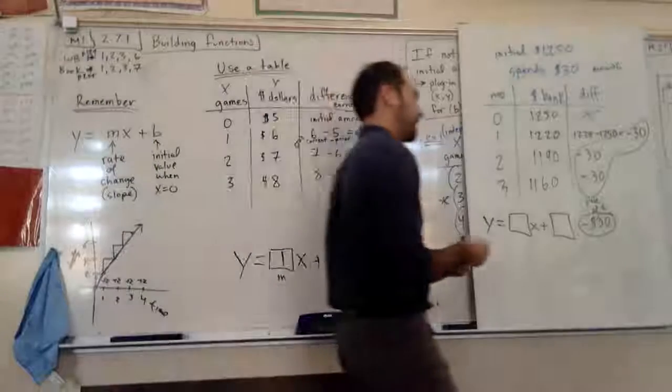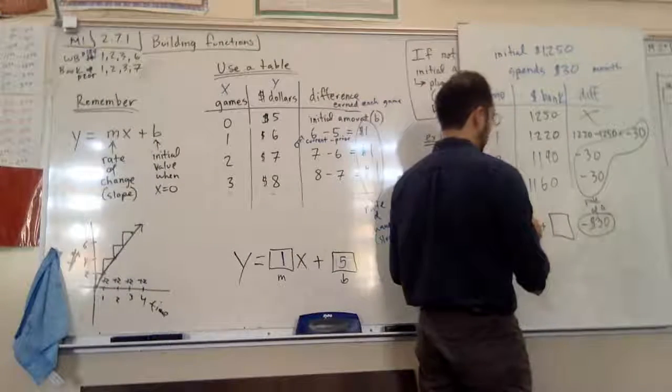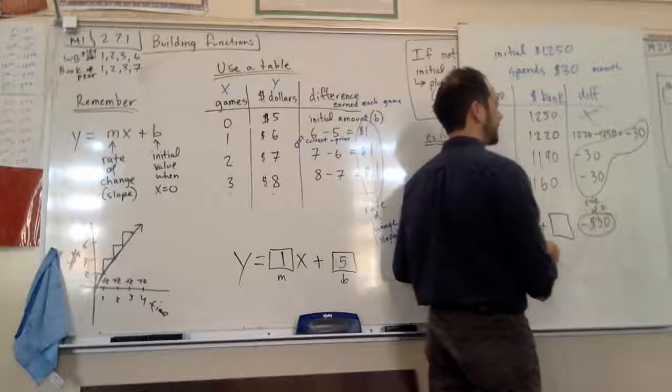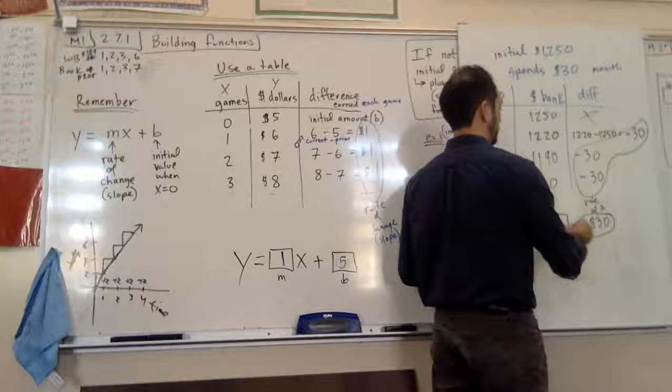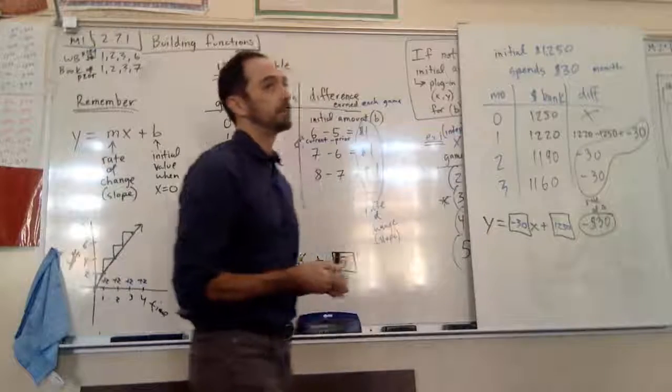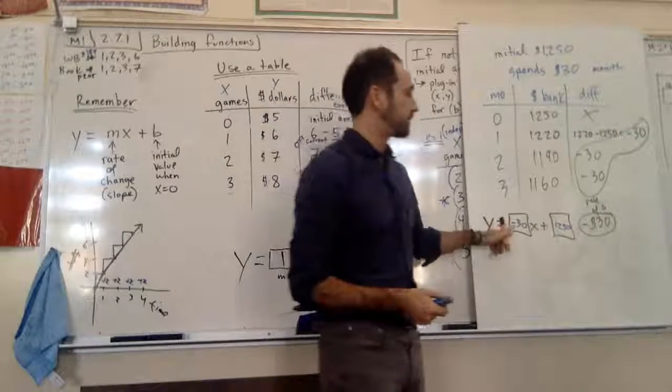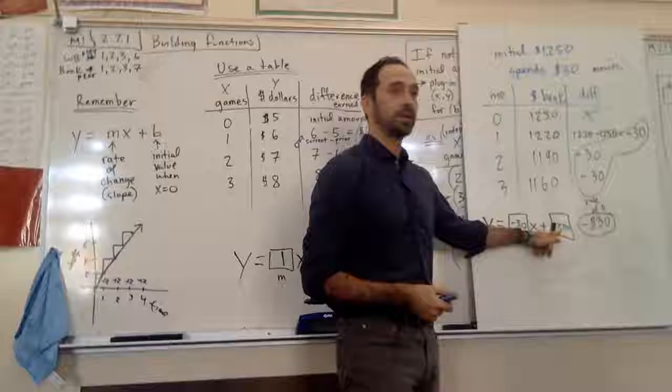Alright, Jordan, help me out. What's my slope? What's my rate of change? Negative thirty. What is my initial amount? One thousand, two hundred, fifty. Everyone good with that? How we found it? Remember, this is just how much it changes between your time values. It's your initial value.